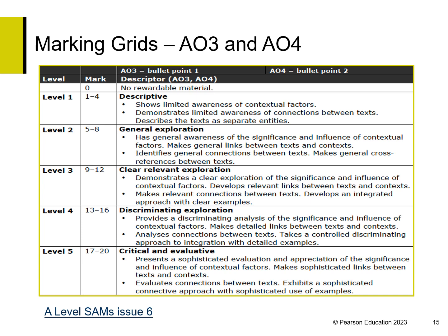The second grid addresses AO3 and AO4, with the same bold descriptors to ensure consistency. Bullet 1 is AO3 and focuses on how students have discussed the significance and influence of contextual factors and made links between the texts and their contexts. Bullet 2 is AO4 and discusses the connections made between the texts and how integrated the approach and use of examples in the text is.